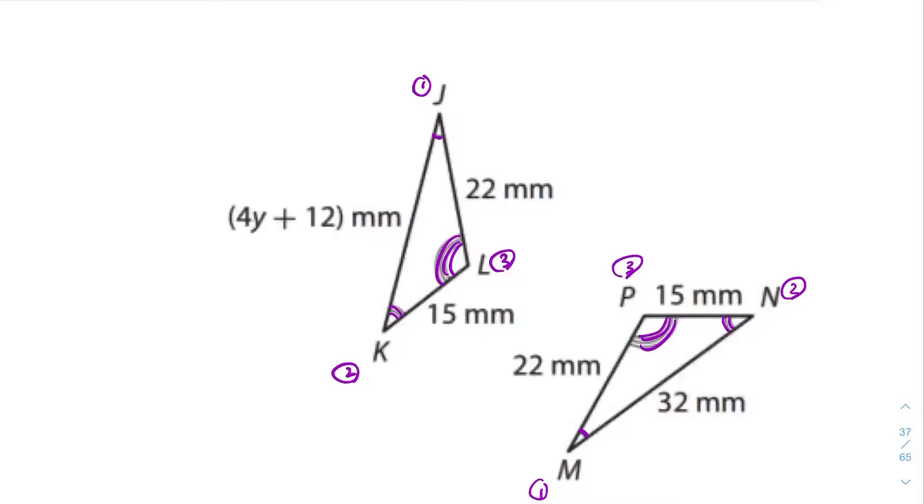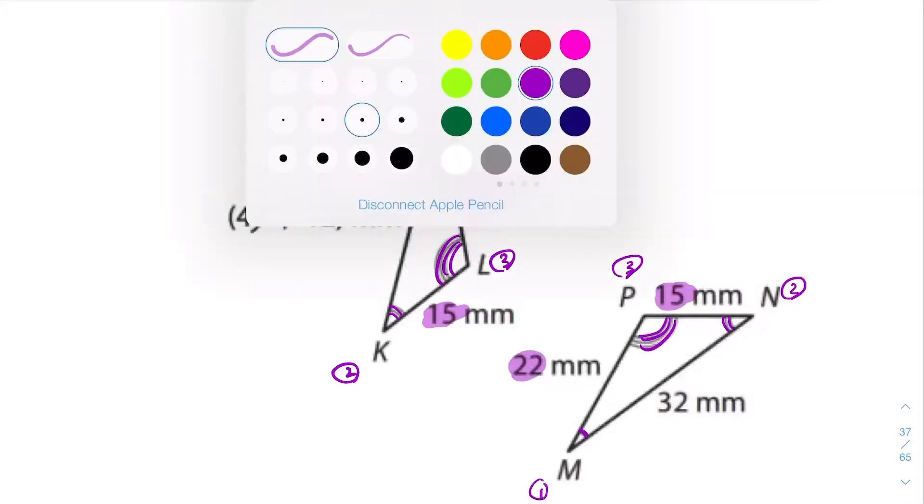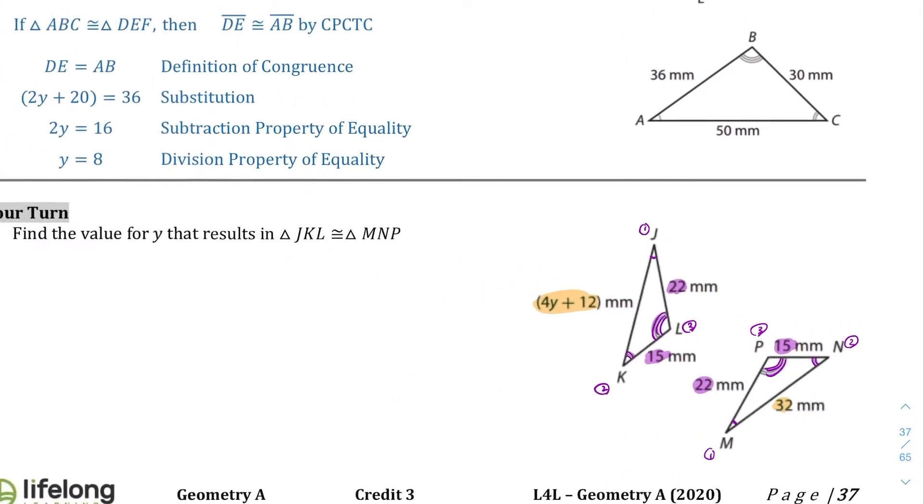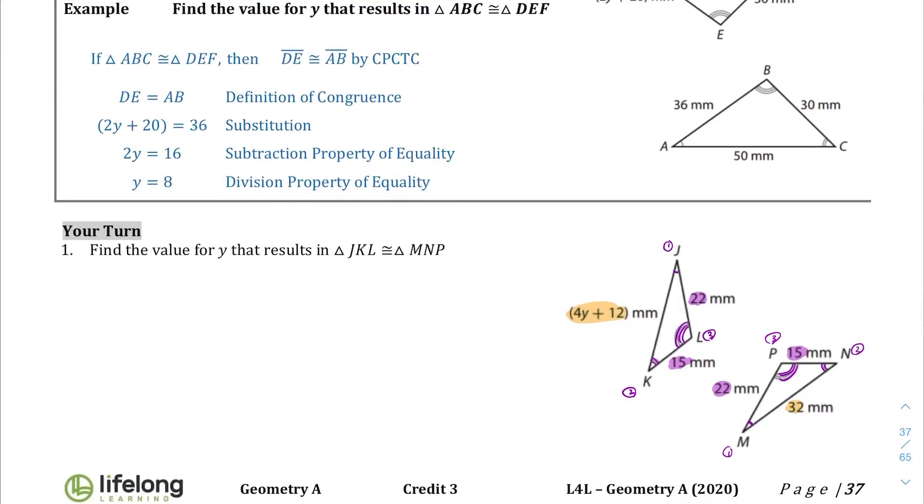As far as I can tell between the sides, they're pretty similar. This one is 15 which corresponds to this one which is 15. This one is 22 which corresponds to this one. Here's the one in question - we are given this binomial expression and that's supposed to be equal to 32. Find the value that makes those two triangles congruent. Well then, we have to prove that 4y plus 12 equals 32. We have to find a value of y that makes that equal.